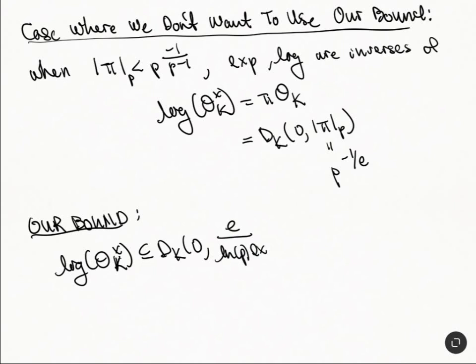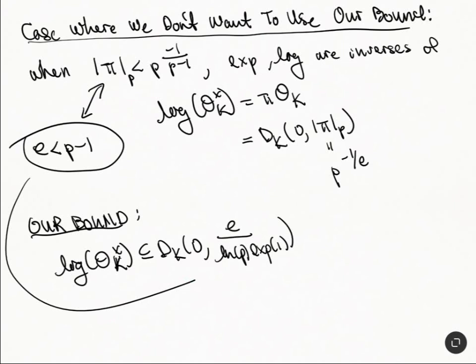And we have that log of O_k^× will just be π of O_k, and this is equal to D_k, the disk centered at 0 of the absolute value of π. So this is p to the minus 1 over e. On our bound in this situation, we have that log of O_k^× is contained in D_k(0) and then we had the ramification degree over natural log of p times exponential of 1. If we combine this and this bound, it gives us a bound like natural log of p times e^(-1). This thing approaches infinity as p approaches infinity.